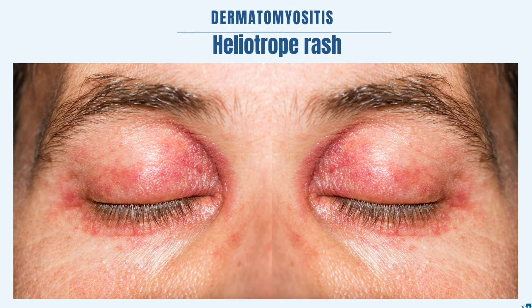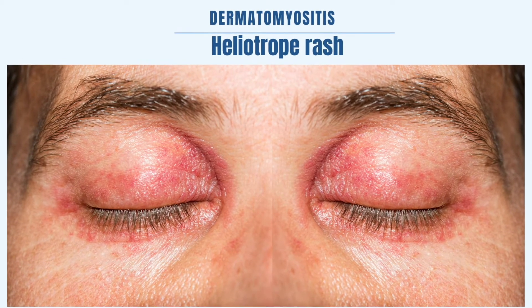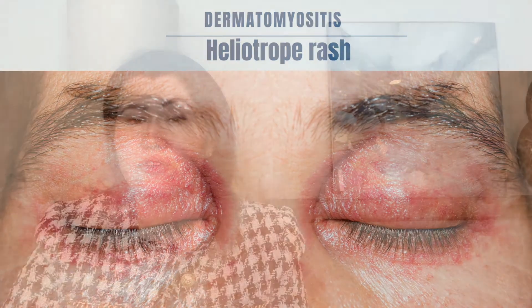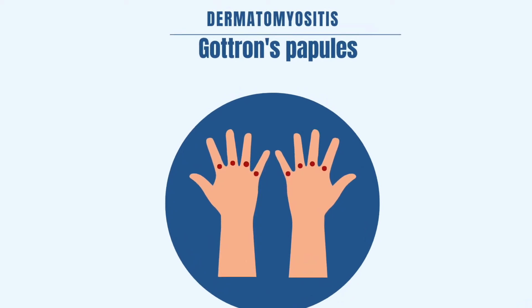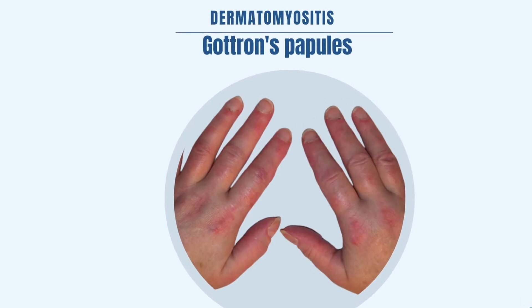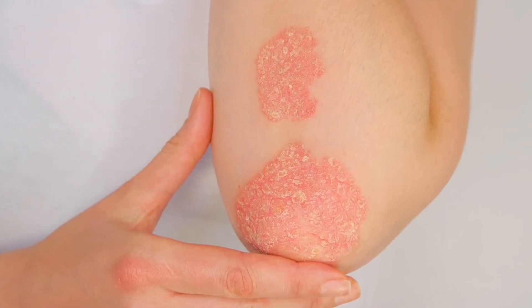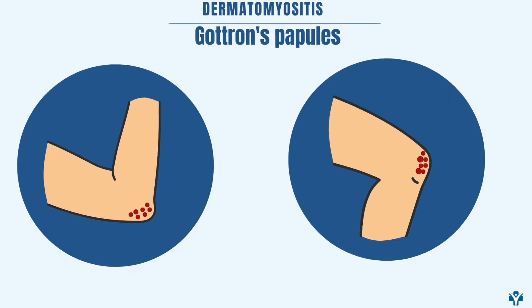Heliotrope rash: This is a purple rash affecting the eyelids, the malar region, the forehead, and nasolabial folds. Gottron papules: These are purple to red, flat or raised lesions that can appear on the back of the metacarpal joints, and can also occur over the elbows and over the knees.